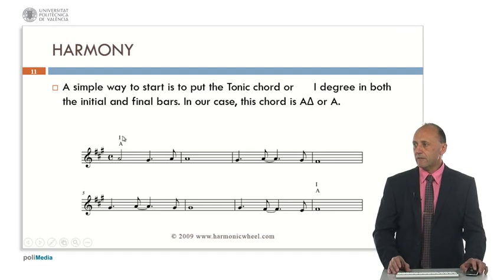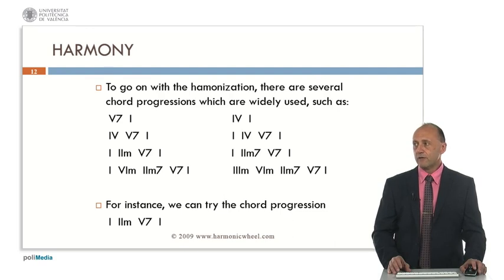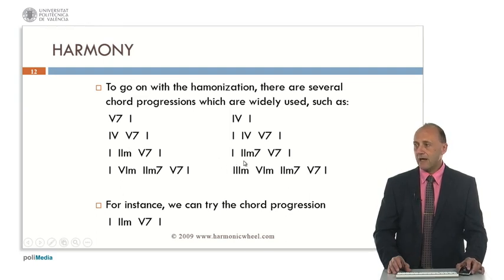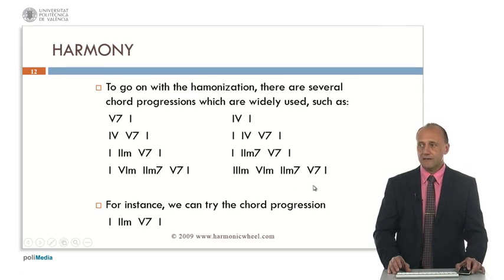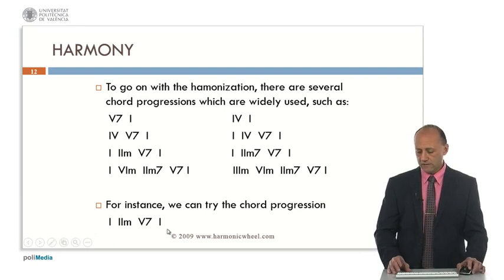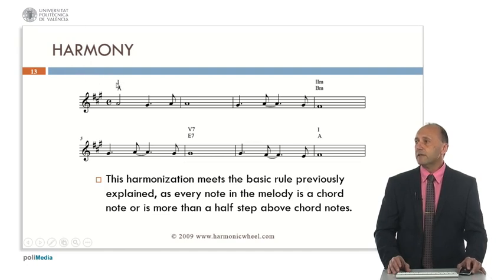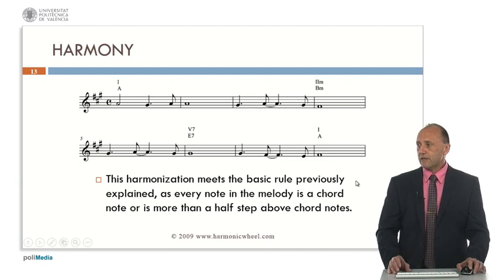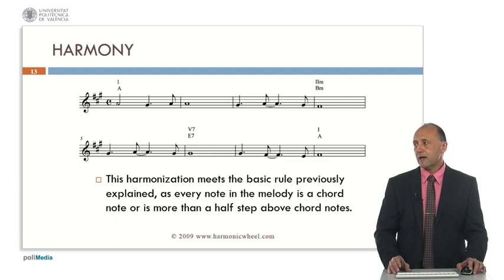Here we can see the first degree at the beginning and at the end of the phrase. To go on with the harmonization, there are several chord progressions which are widely used, such as 5-1, 4-1, 4-5-1, 1-4-5-1, 1-2-5-1, or including the minor seventh in the second degree. Other options are 1-6-2-5-1, 3-6-2-5-1, etc. In this case, we chose a very simple progression: 1-2-5-1. Here you can see those degrees: 1, 2 minor, 5 dominant seventh, and again degree 1. This harmonization meets the basic rule previously explained, as every note in the melody is either a chord note or is more than a half step above the chord note.